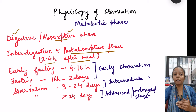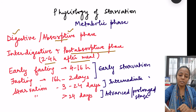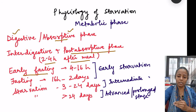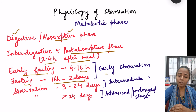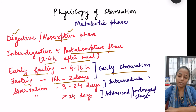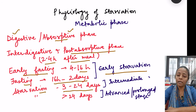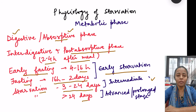After this phase — that is, four hours after the meal — the phase of fasting starts. We have different levels of fasting depending on how much time has passed since the last meal. First is early fasting, from 4 to 16 hours; then fasting from 16 hours to two days — both together form the early starvation phase. Then we have the starvation phase from three days to 24 days (intermediate starvation), and greater than 24 days is advanced or prolonged starvation.